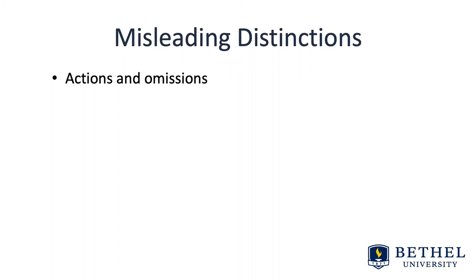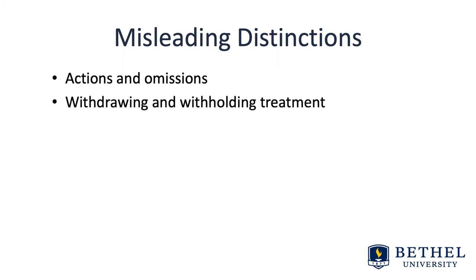The second distinction that should be used with caution is withdrawing versus withholding treatment. This distinction is problematic because it's not always easy to tell the difference between the two. Additionally, research has found that the decision to withdraw treatment is psychologically more difficult to make than the decision to withhold treatment, but ethically, it can actually be easier to justify withdrawing treatment than withholding it from the onset.